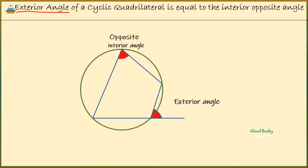Now, if the exterior angle is 70 degrees in size, then the opposite interior angle is also 70 degrees. This is because the exterior angle of a cyclic quadrilateral is equal to the interior opposite angle.